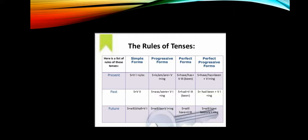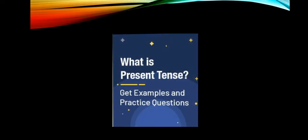For perfect continuous forms: present perfect continuous uses have/has plus been plus verb with -ing form. Past perfect continuous uses had been plus verb with -ing form. Future perfect continuous uses will have been plus verb with -ing form.